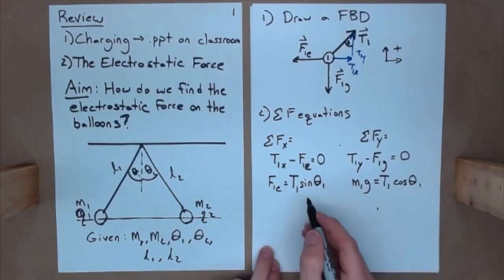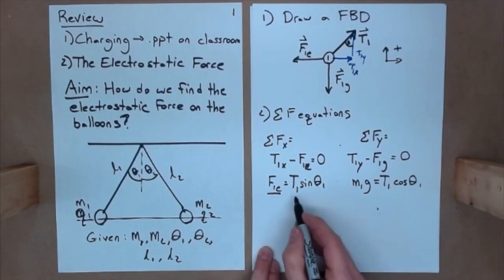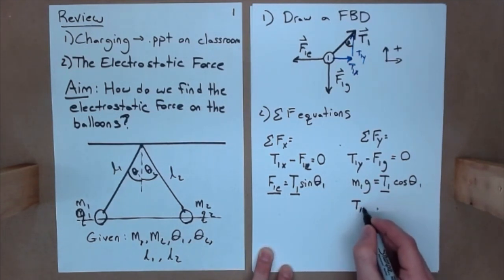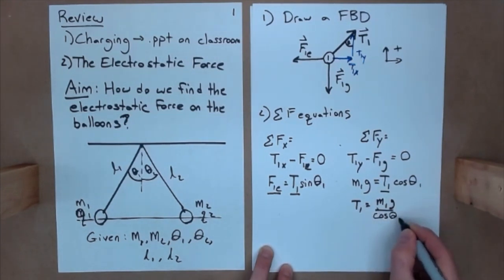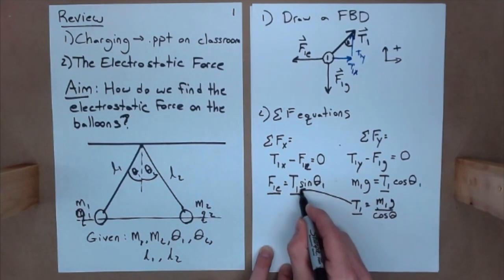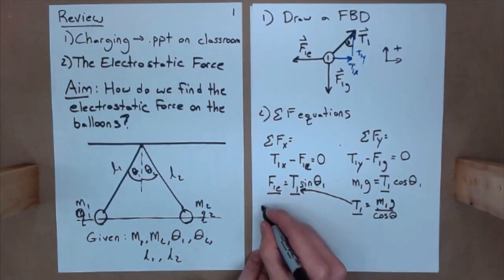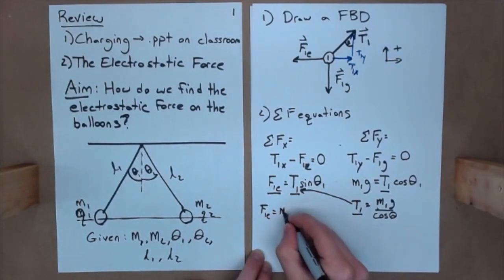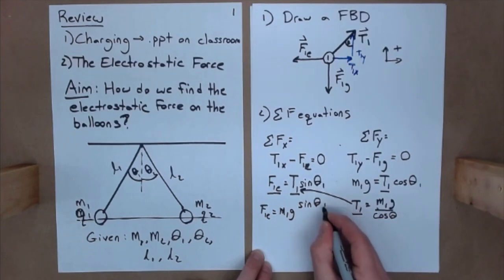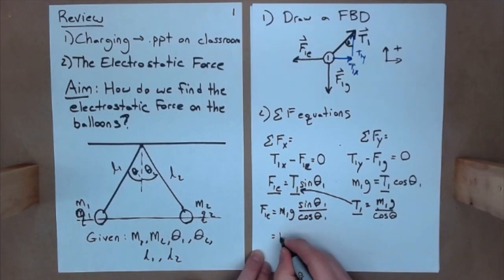All right, now, take a look at this. We are looking for this value here. We don't know T1, but we have it in both equations. We have T1 here, and we have T1 here. So, let's go ahead and solve here for T1 equals M1g over cosine theta. I can then plug this T1 into this T1, and get that my F1e is equal to M1g sine theta 1 over cosine theta 1. We should all recognize that as tangent, and so we have M1g tangent theta 1.